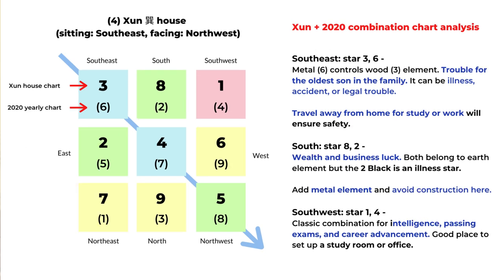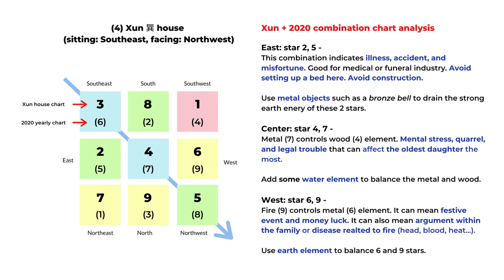For the southwest, it's a one and four combination — a very classic auspicious combination for intelligence, passing exams, and career advancement. This is a good place to set up a study room, office, or kids' bedroom. The southwest is the best area for the Shun house in 2020. The east has stars two and five — both negative stars related to illness and accident, though good for the medical or funeral industry. Avoid setting up a bed here if you are concerned about health, and avoid construction. The classical remedy is metal objects such as a bronze bell or metal clock to drain the energy of two and five.